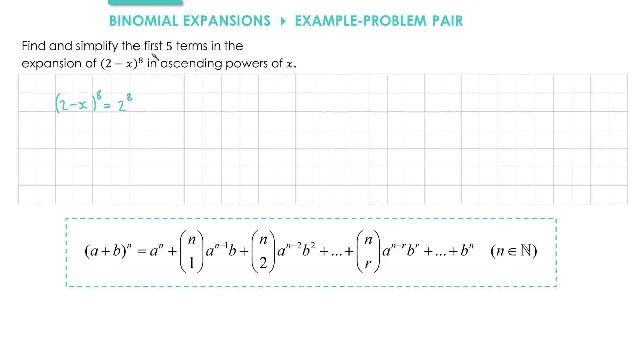However, this time, because we're only doing the first five terms, we can't then write down the last term because they're nine terms in all. And so instead, what we're going to do next is write in which binomial coefficients we're going to find.